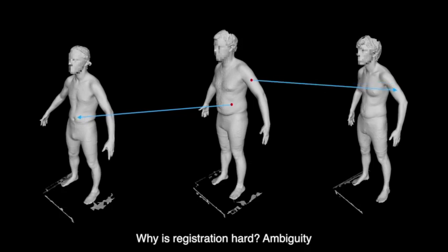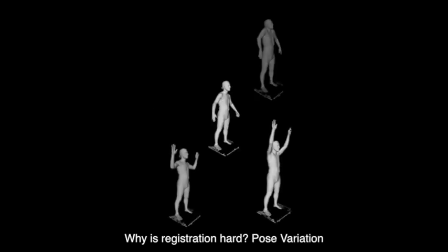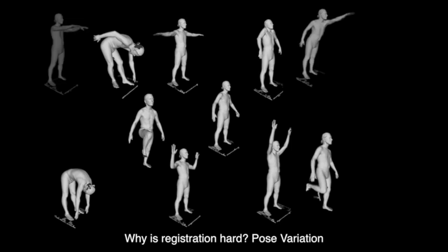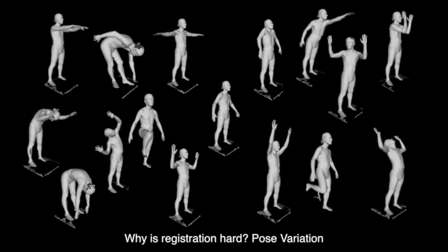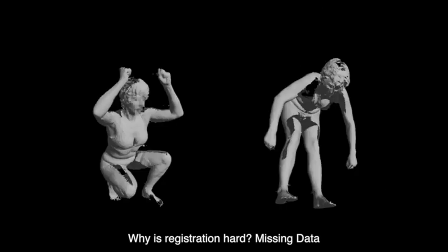First, many parts of the body lack distinct features, making registration ambiguous. Pose variation creates additional problems for registration, since body parts may look very different in different poses, and we cannot make assumptions about where the parts may be found in 3D. In some poses, portions of the body may not be seen by the scanner, resulting in missing data and significant holes.